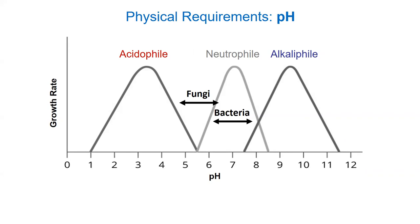Next physical parameter is pH. Most bacterial organisms enjoy a neutral pH of seven — neither acidic nor alkaline. Fungal organisms seem to prefer a slightly more acidic environment, possibly related to their soil habitat. pH is something lab technicians consider when formulating growth media.